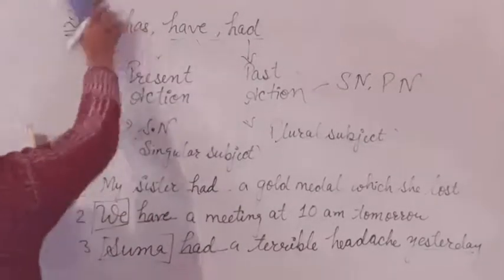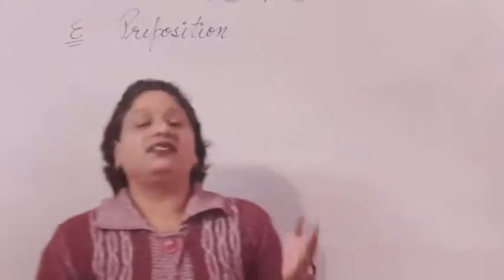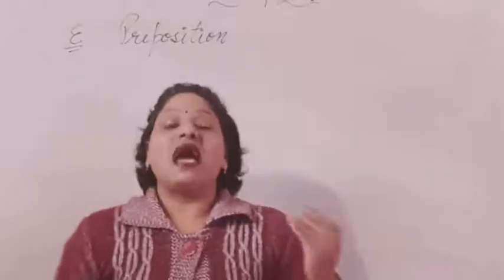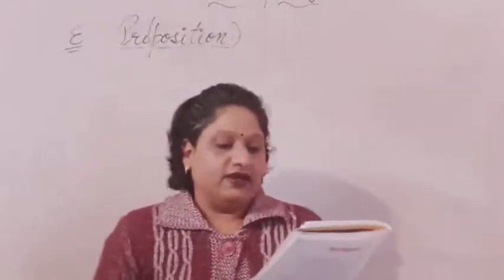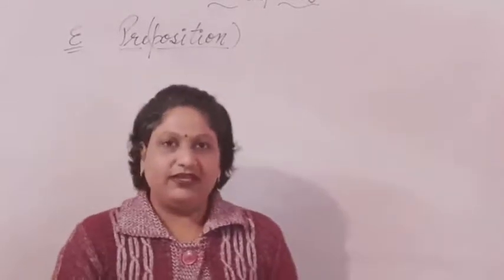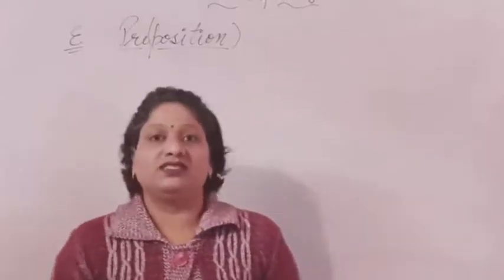Now, come to question number E about prepositions. Prepositions are words that tell us the position of a person, animal, thing, or place. The word is made of two parts: pre and position. There are many preposition words such as in, on, behind, under, inside, and over. All these are explained in a previous video.